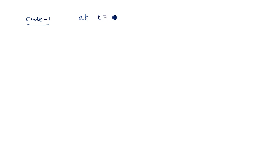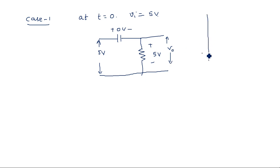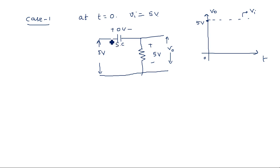Case 1: At T equal to 0, input is assumed to be 5 volts. The capacitor simply acts as a short circuit, so voltage across the capacitor is 0 volts and voltage across the resistor is 5 volts. The output is also equal to 5 volts — 100 percent of the input. So at this instant, as input suddenly changes from 0 to 5 volts, the capacitor acts as short circuit and the full voltage appears across the resistor, which is in parallel with the output.